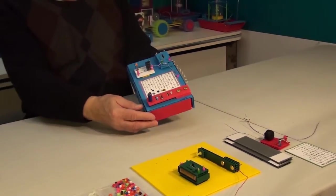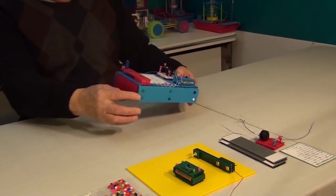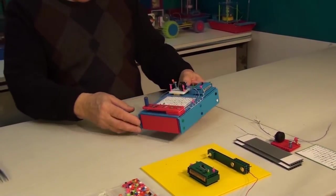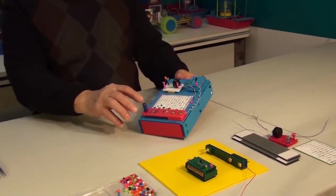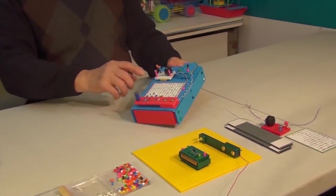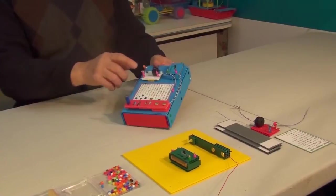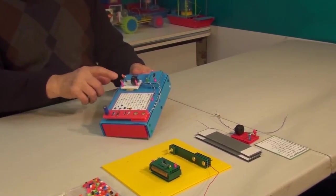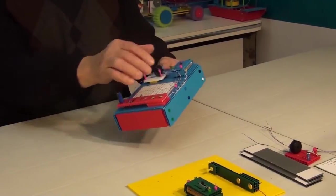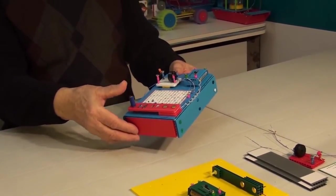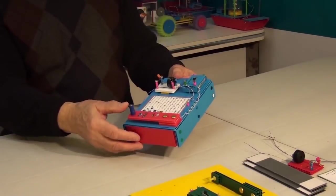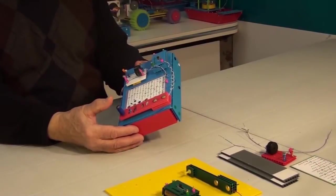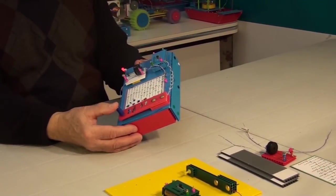We have a simple box. On top of it you can see the telegraph key, the power source, the sound signal or buzzer, and the light signal. Here is how the signal is transmitted. Dots are transmitted like so, and the dashes like so.